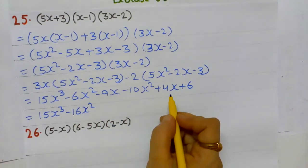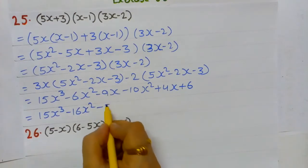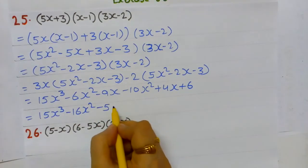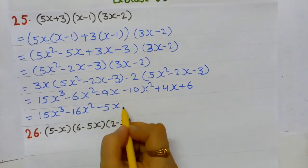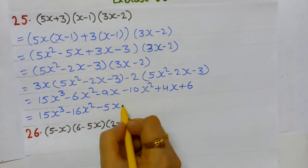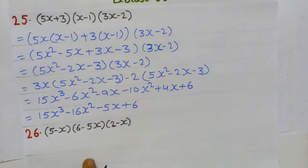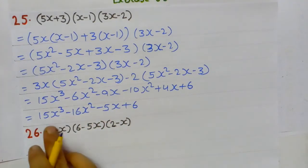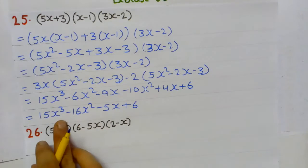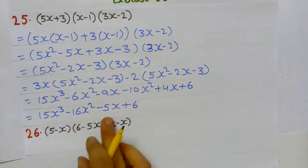Now adding like terms: 15x³; -6x² and -10x² combine to give -16x²; -9x and +4x give -5x (different signs, so subtract: -9 + 4 = -5); constant +6.